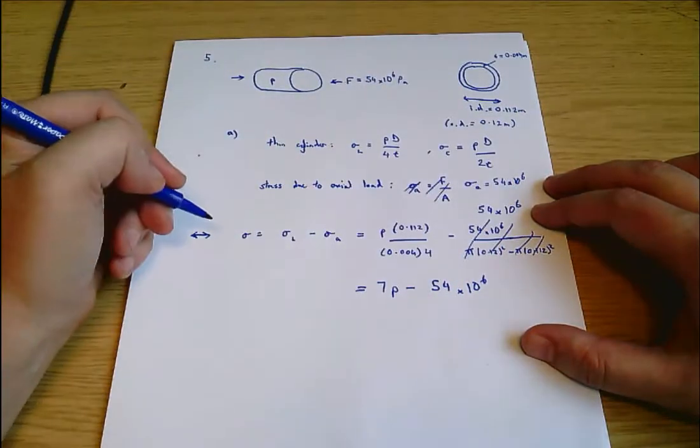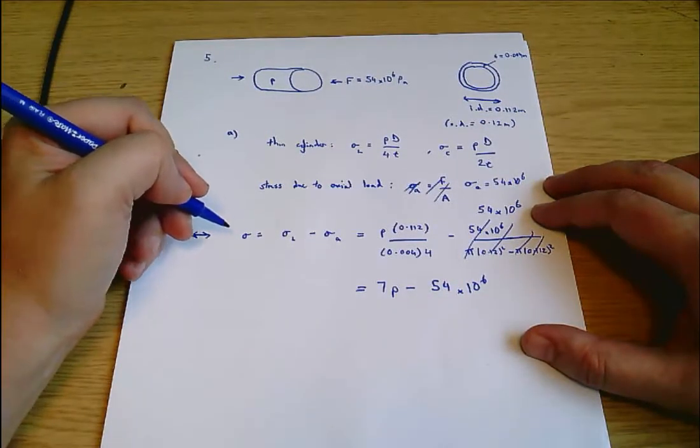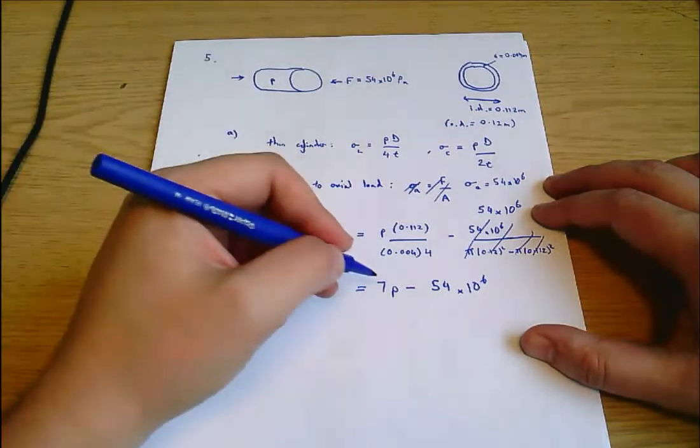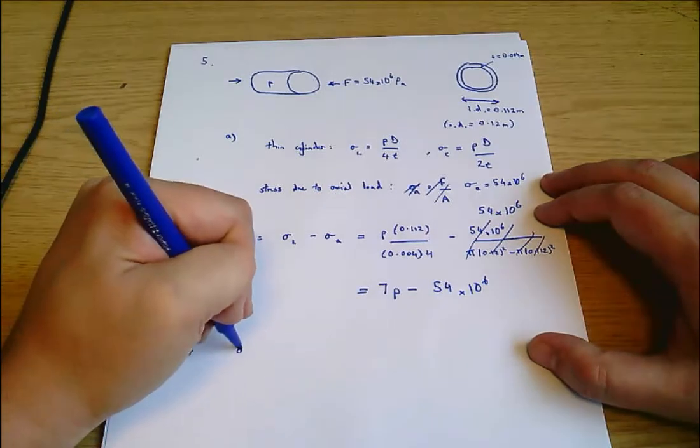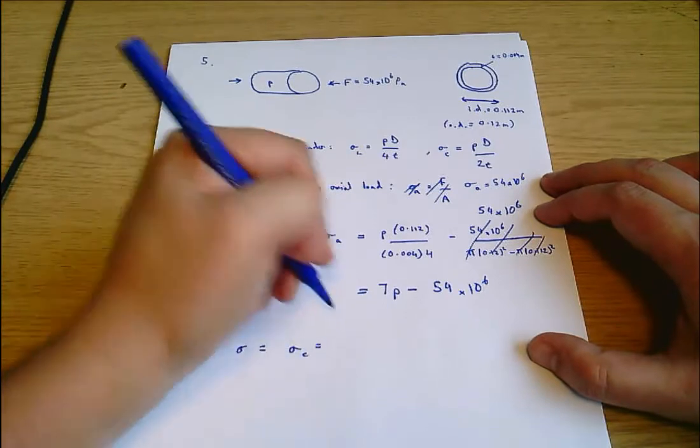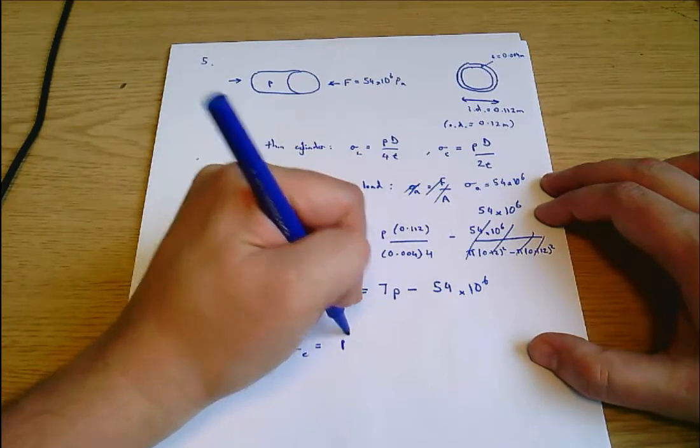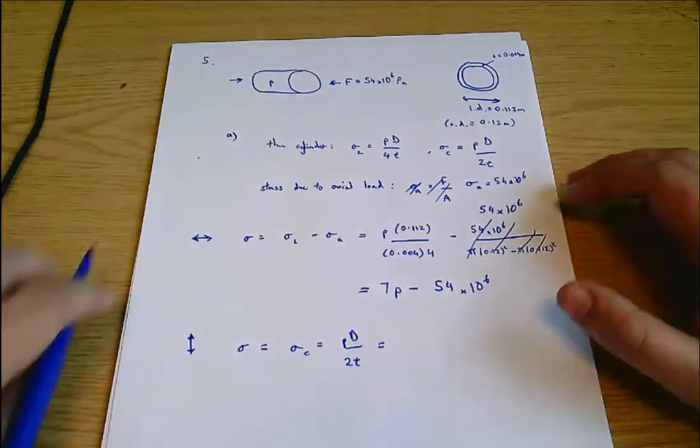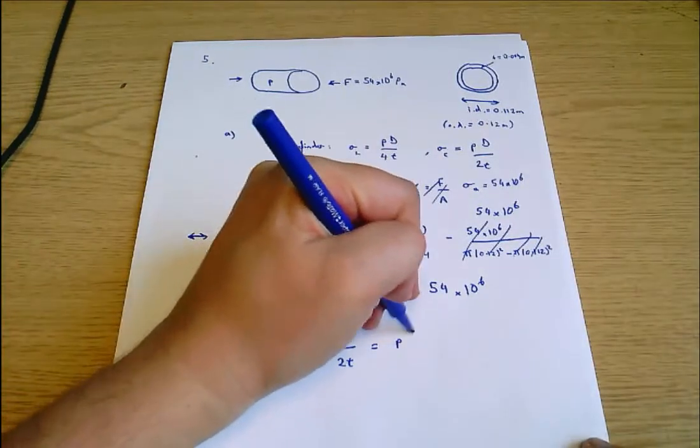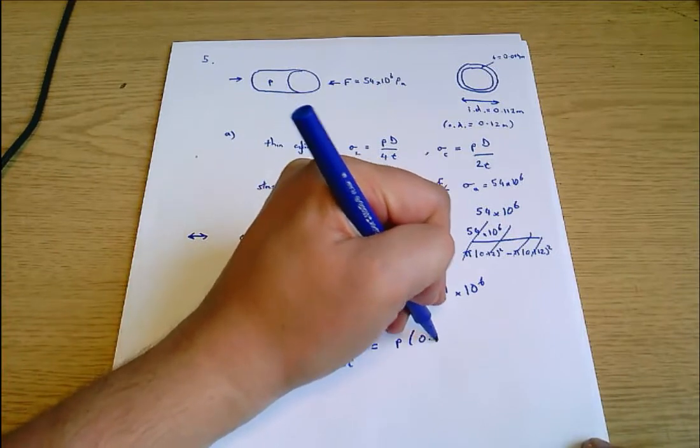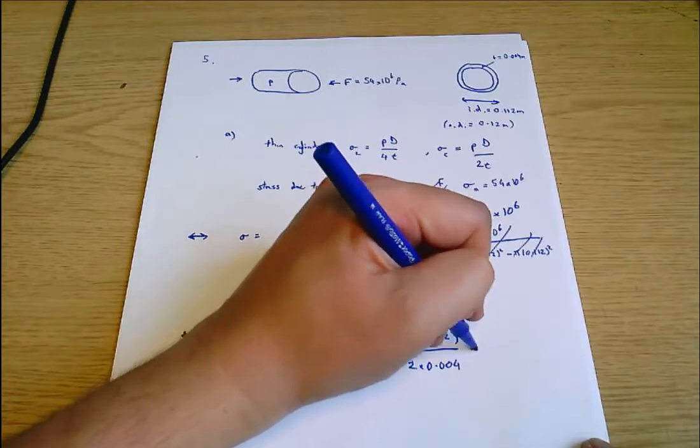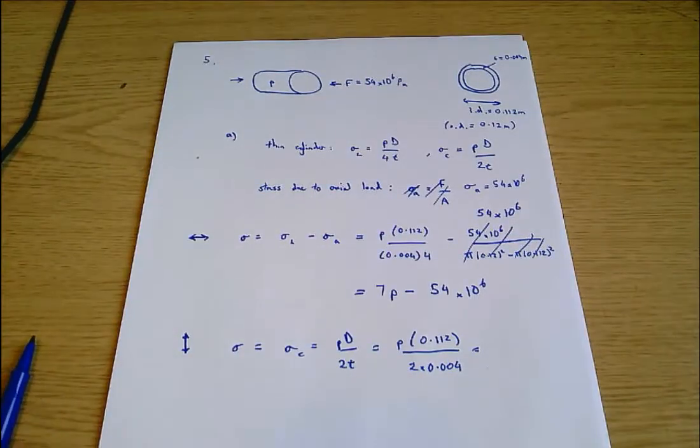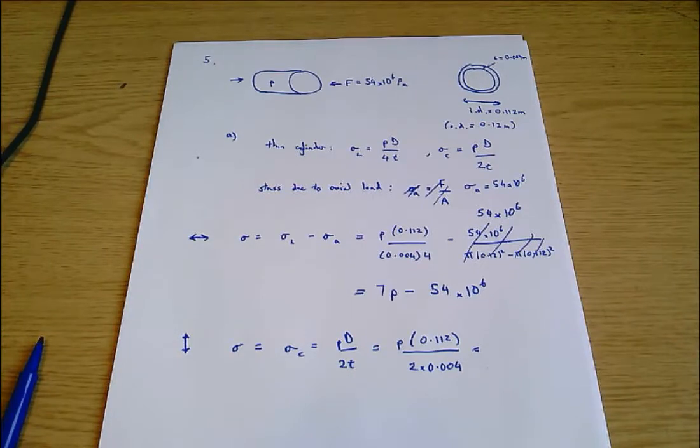So the total longitudinal tension is 7P minus 54 times 10 to the 6. Similarly, if I look at the circumferential tension,